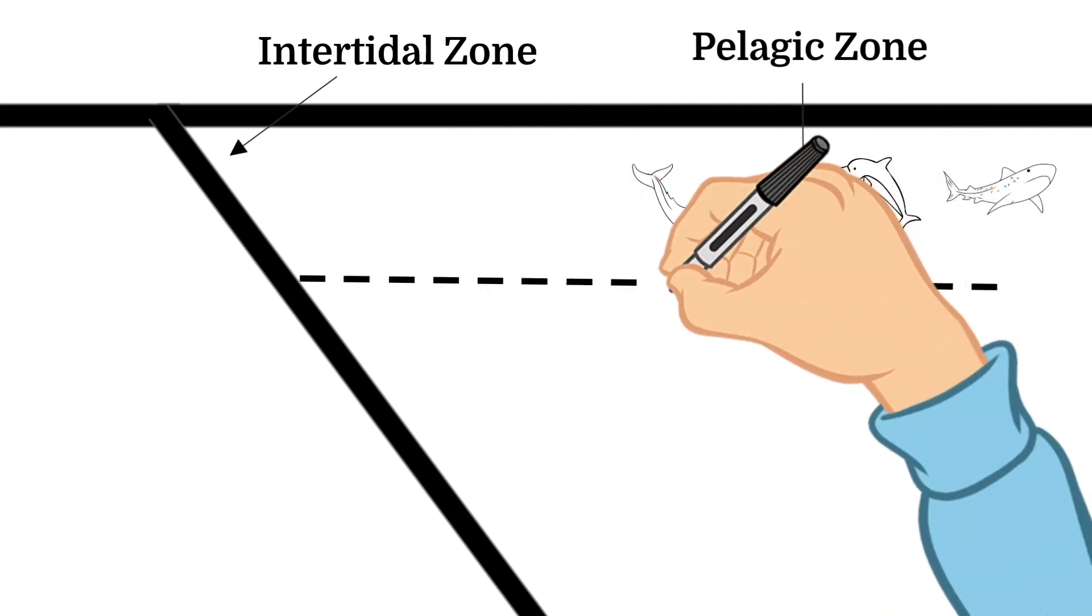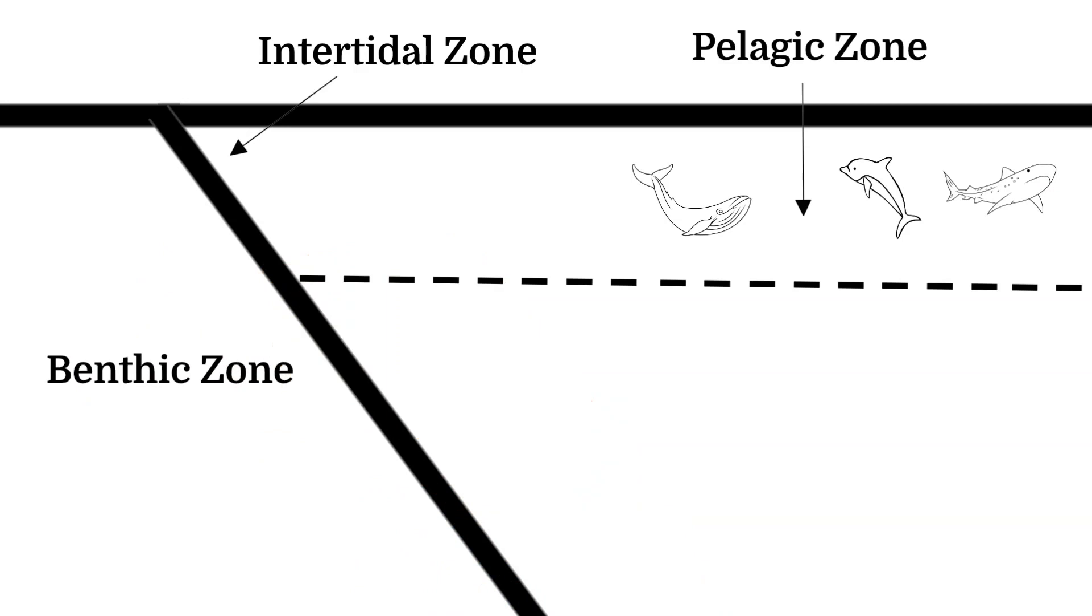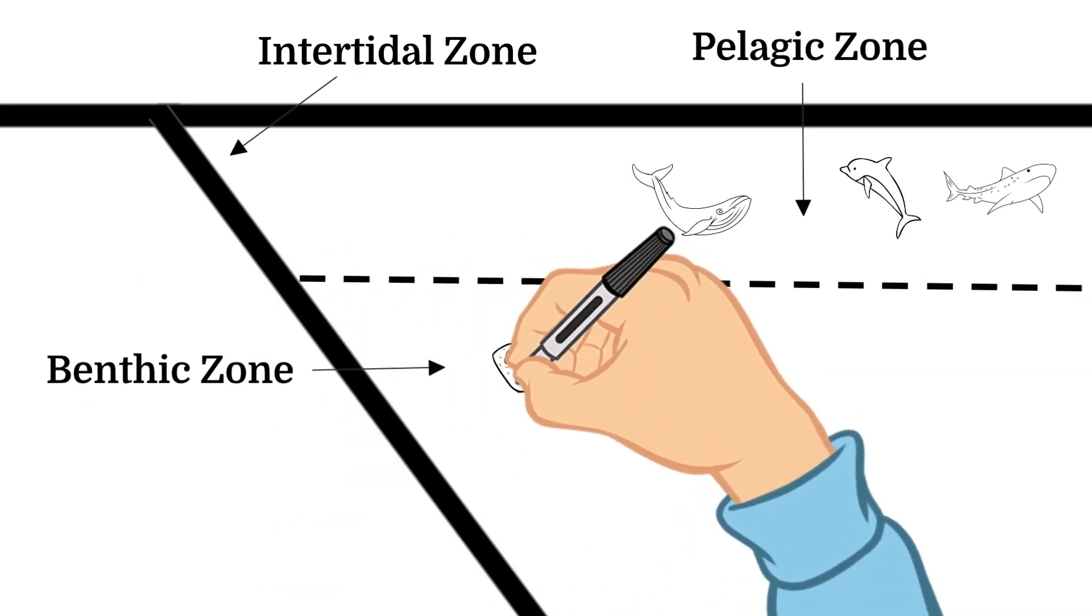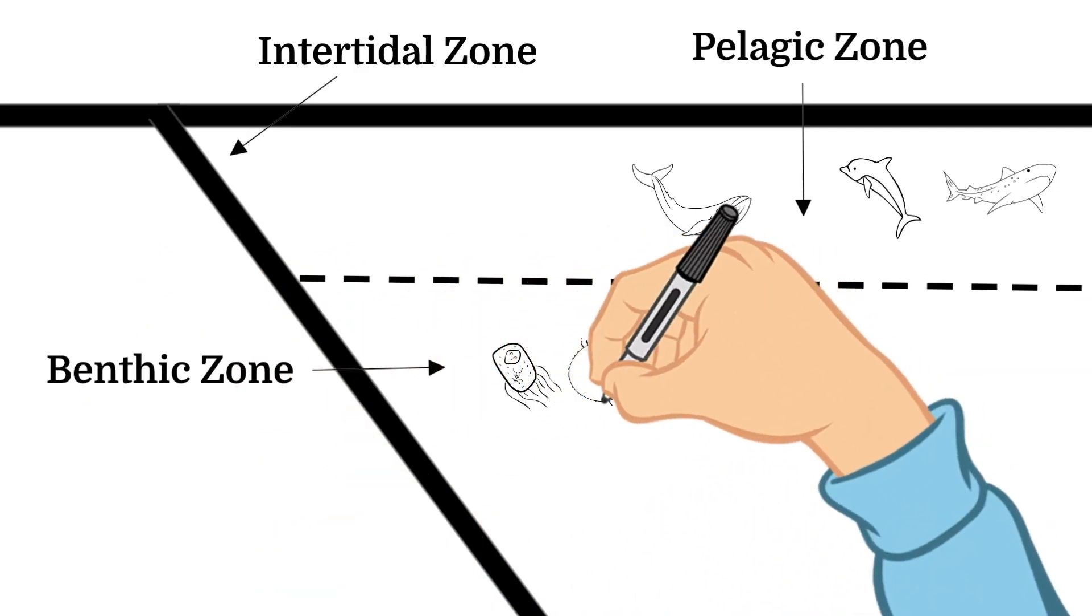Next is the benthic zone where seaweed, bacteria, fungi, and a wide variety of sponges live.